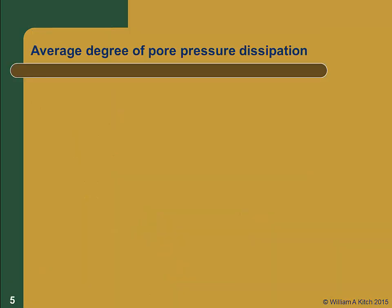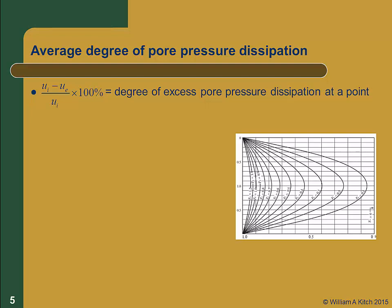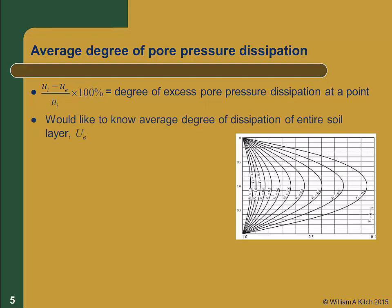To get to a simpler solution, let's look at how pore pressure dissipates in our consolidating layer. We know that as excess pore pressure dissipates, the soil settles. We already learned how to compute the excess pore pressure at any point in the layer at any time using the isochrones in Figure 11.4. With this information, we can define the degree of pore pressure dissipation at a point as the initial excess pore pressure minus the current excess pore pressure divided by the initial excess pore pressure. At the start of consolidation, u_i is equal to u_e and the degree of excess pore pressure is zero. At the end of consolidation, u_e is equal to zero and the degree of excess pore pressure dissipation is 100%. What we really want to know is the average degree of excess pore pressure dissipation for the entire consolidating layer, Ū_e.